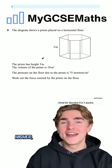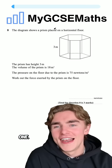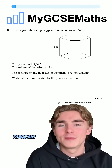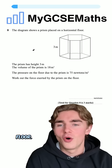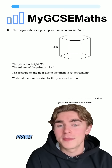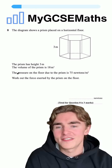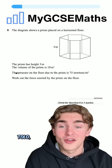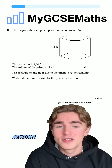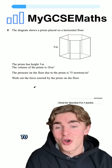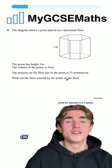Whether you're doing foundation or higher, you want to be getting three out of three on this one. The question says the diagram shows a prism placed on a horizontal floor. We're told that the height of the prism is three meters and the volume is 18. We're told that the pressure on the floor due to the prism is 75 newtons per meter squared, and we're asked to work out the force exerted by the prism on the floor.